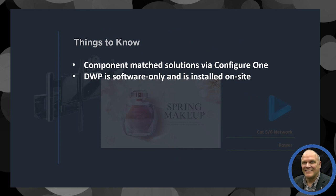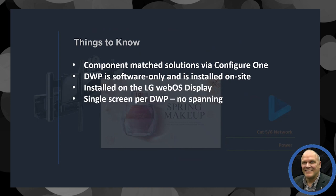It's not possible to pre-configure the DWP like we do with the DMPs, primarily because the display is drop-shipped directly to the site and there's no real external piece of hardware to ship. No spanning — the DWP is a single-screen-only type install, so each LG WebOS TV or display gets its own install of DWP and there's no spanning of content across those displays.